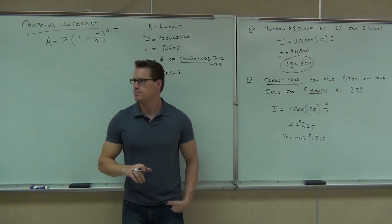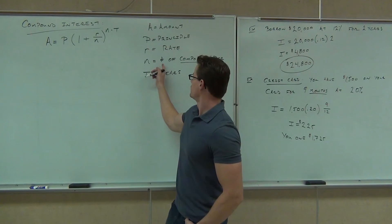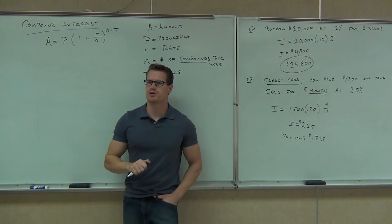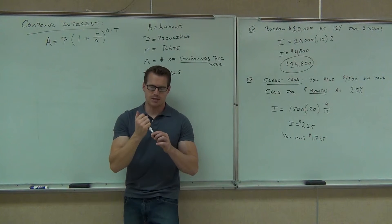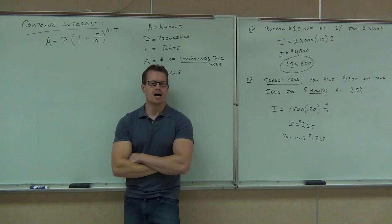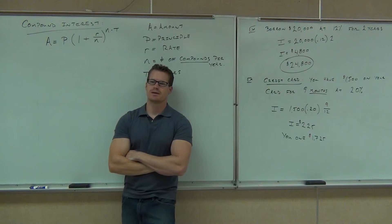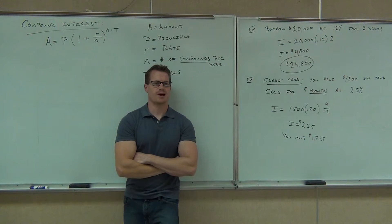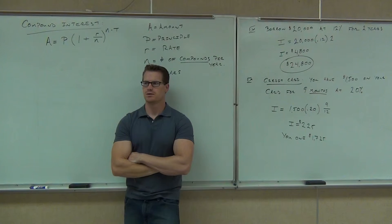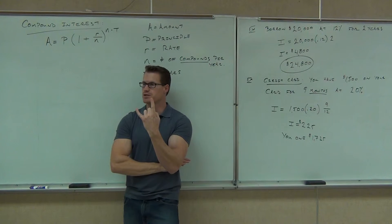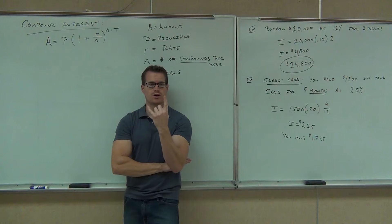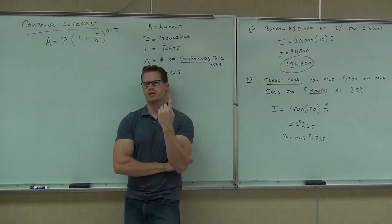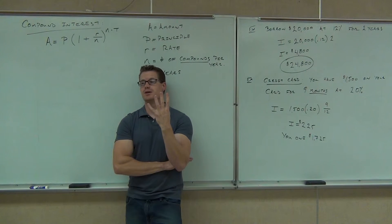That means in English, it means the amount of times you're getting interest tacked on per year. Number of compounds per year. So let's say I'm a bank. And you come to me, you go, "Okay, I need to borrow money." And I say, "I compound interest semi-annually." How many times is semi-annually to you? Twice. Semi-annually is twice. So that means your N would be two. You'd get interest tacked on twice a year. Do you get it? Annually would be one. What would quarterly be, do you think? Four. What would monthly be? Twelve. Why twelve? How many months are in a year? Twelve. Okay.